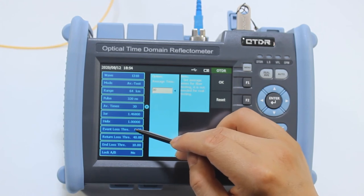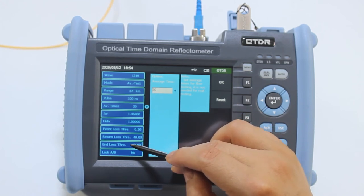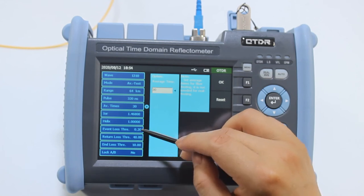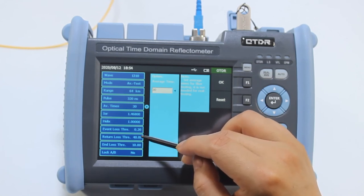For event loss thresholds, reflectance loss thresholds, and end loss thresholds we also fill in the default value.